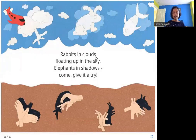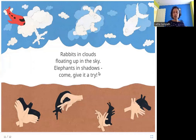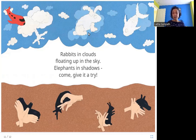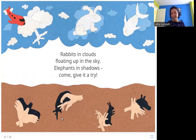Rabbits in clouds floating up in the sky. Elephants in shadows — come, give it a try! Here you can see clouds that seem to have shapes: this one looks like a tree, this one looks like a rabbit. And you can make shapes with your hands to create shadows on the wall — see, this looks like a bird, this looks like a rabbit.